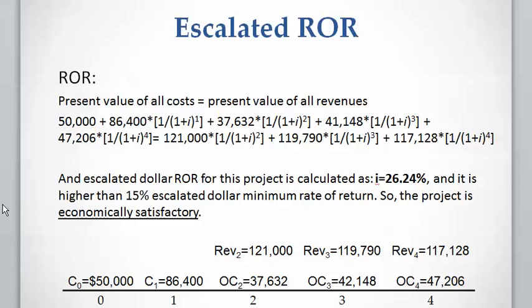We calculate the escalated dollar cash flow rate of return as 26.24%. Because this rate of return is higher than the 15% escalated dollar minimum rate of return, we can conclude that this project is economically satisfactory. We can also calculate the NPV for this project.